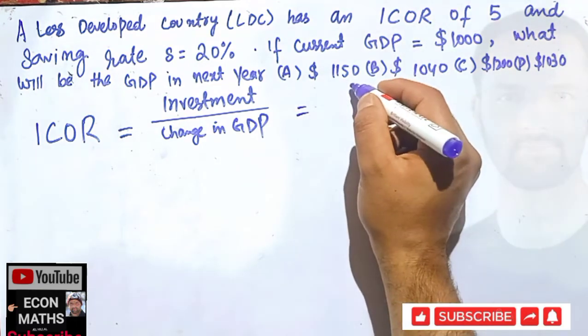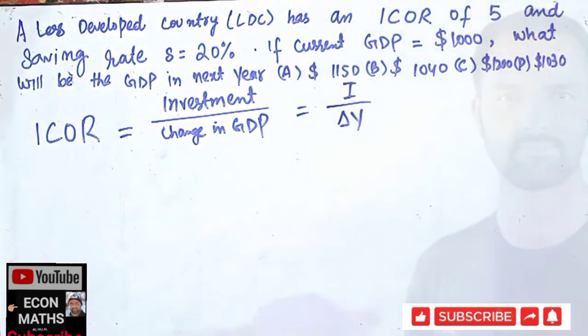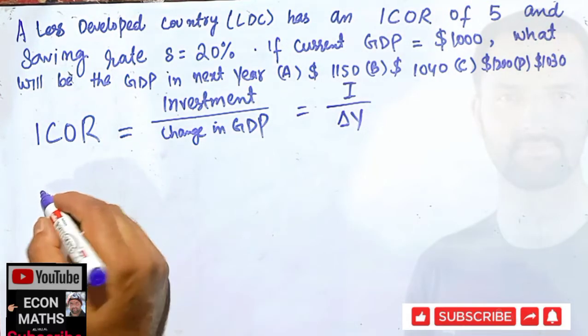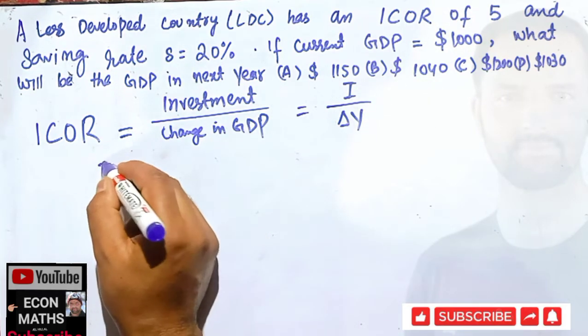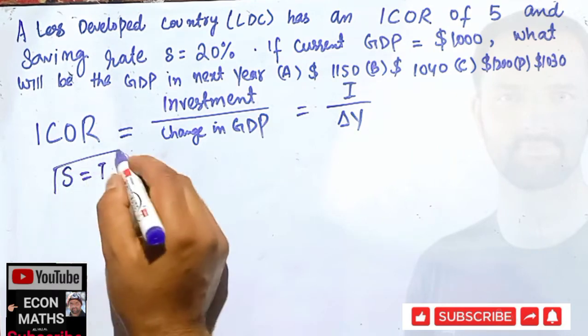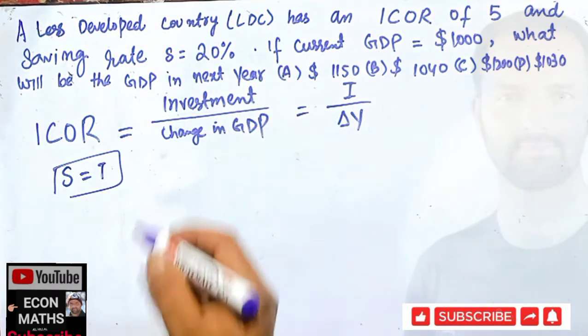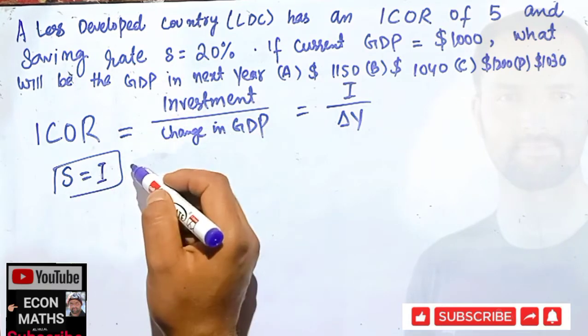That means we have I upon delta Y. Now, we assume here that whatever is saved is invested. So we can solve this very question. We assume that whatever is saved is invested.